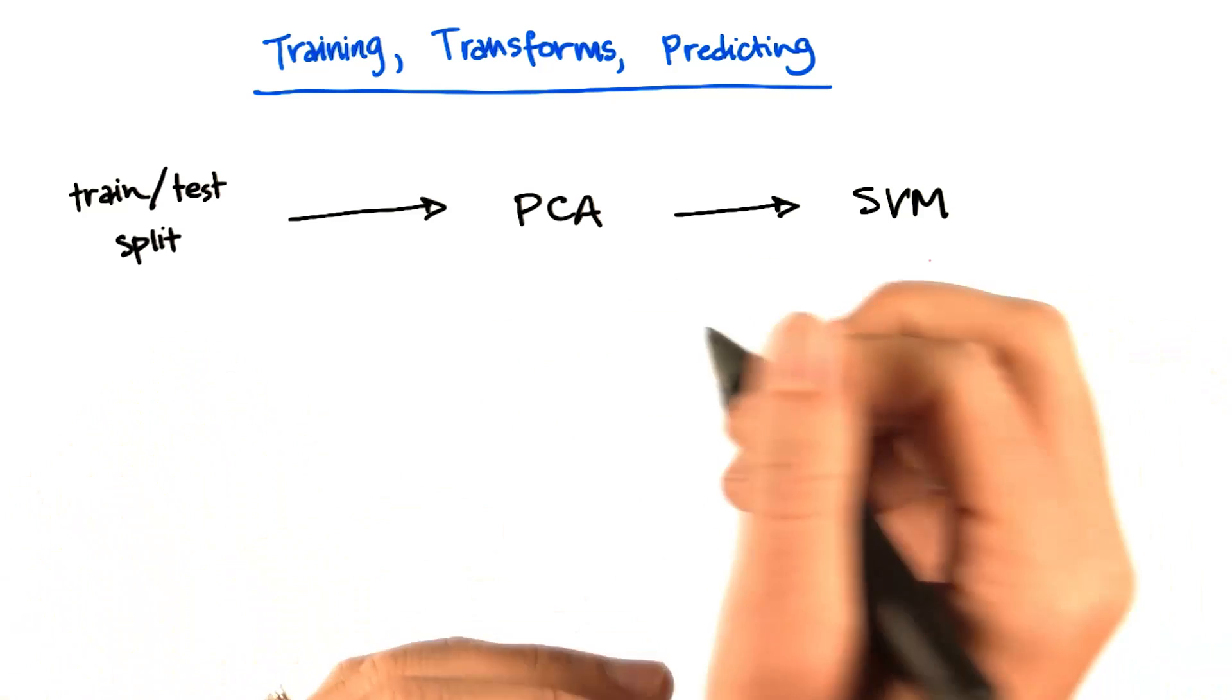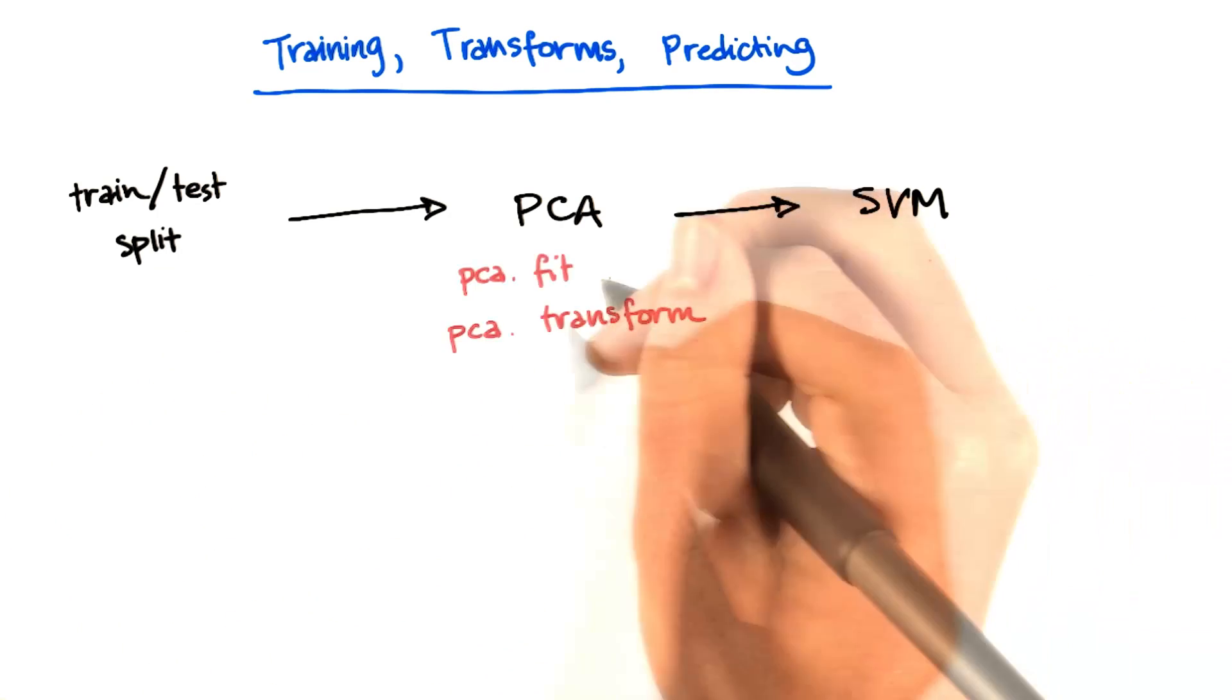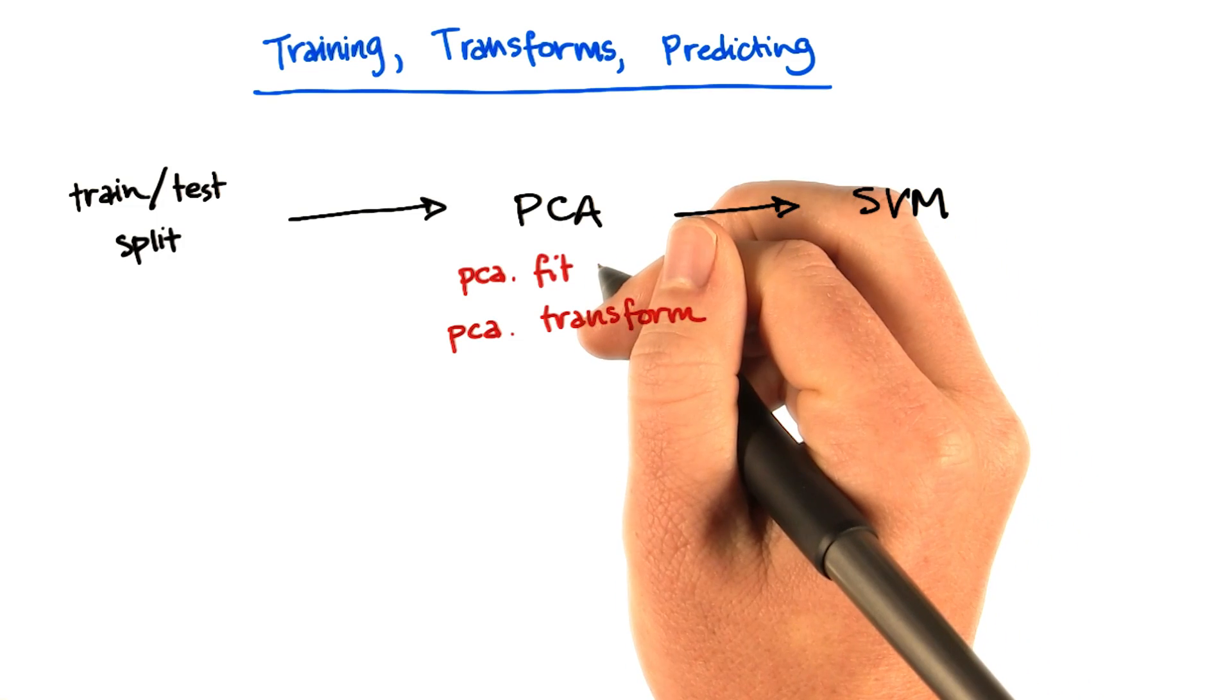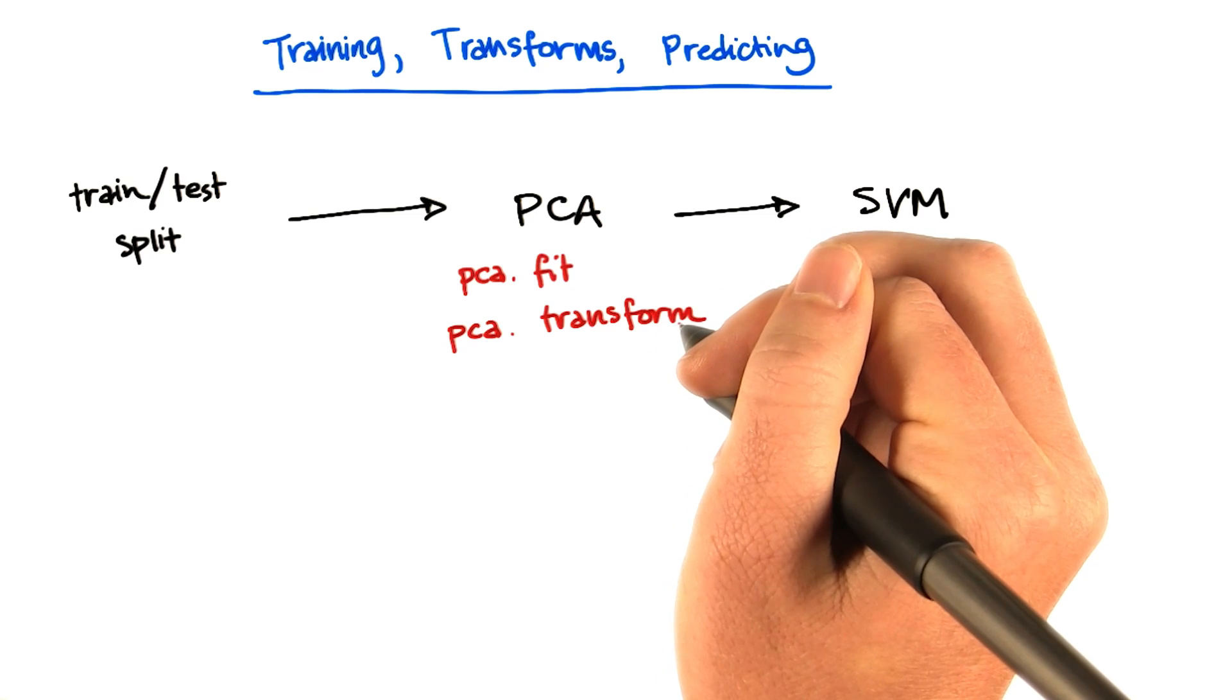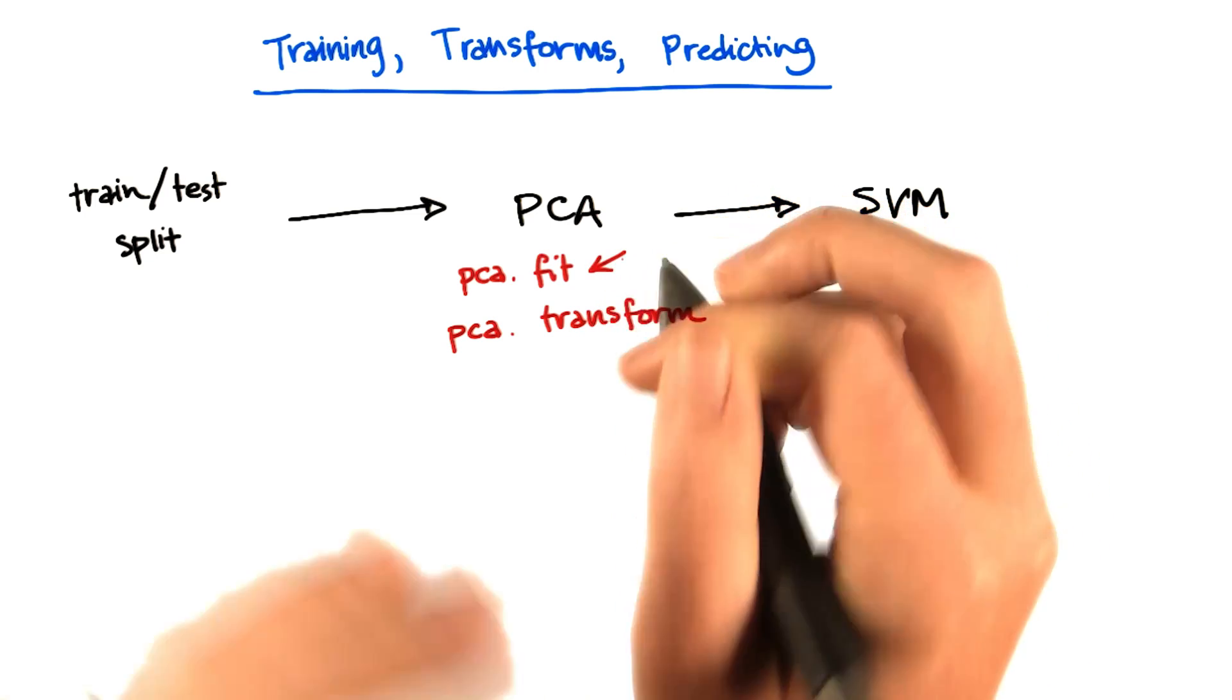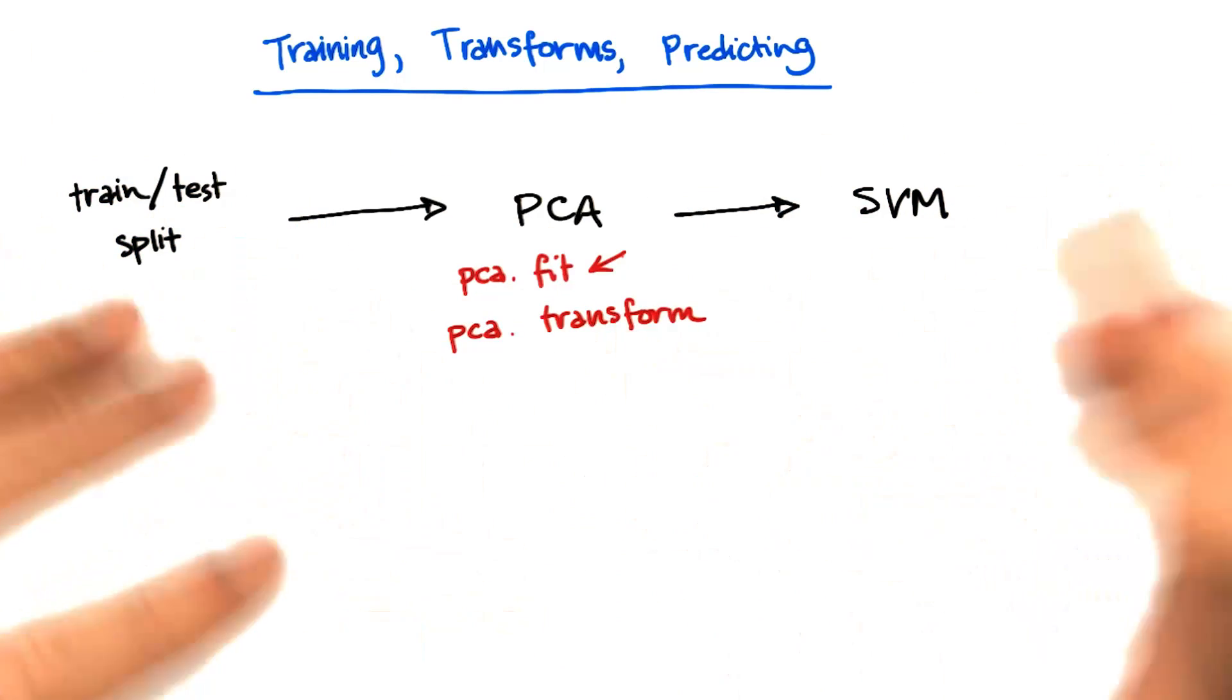Remember that PCA itself can have a few different commands that you might call on it. You can call fit on your PCA, which actually finds the principal components of your data. But then you also have to call PCA.transform, which uses this fit to actually transform the data into the new principal components representation.